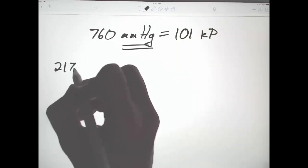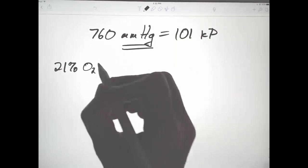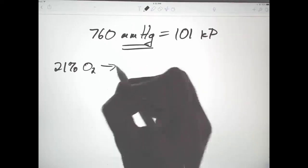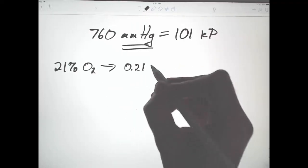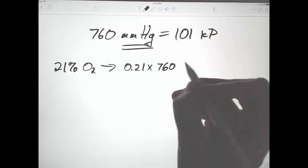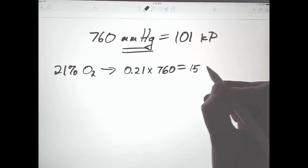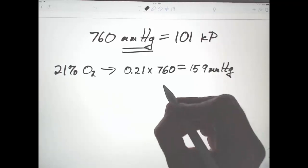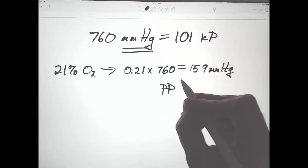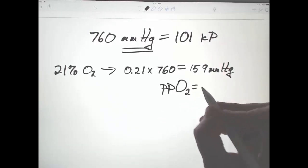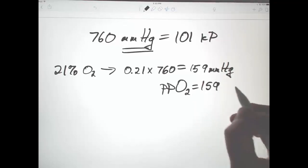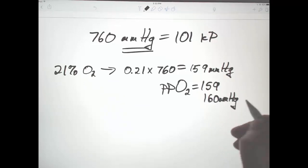About 21% of the atmosphere is oxygen, which means 0.21 times 760 equals 159 mmHg partial pressure. So the partial pressure of oxygen at sea level is 159 mmHg, and we usually round to, in this class, 160 mmHg. That would also be equal to about 21 kPa.